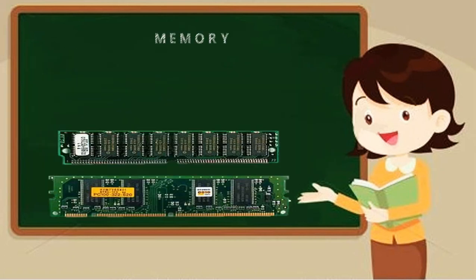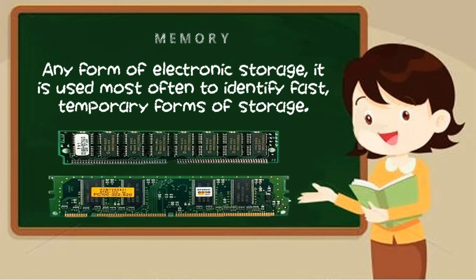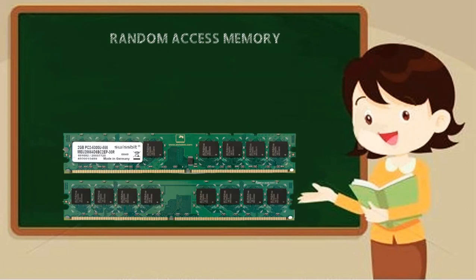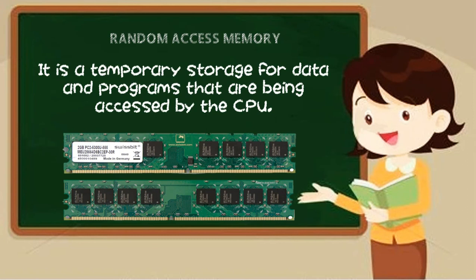Memory — any form of electronic storage. It is used most often to identify fast, temporary forms of storage. Random access memory, or RAM — it is a temporary storage for data and programs that are being accessed by the central processing unit, or CPU.